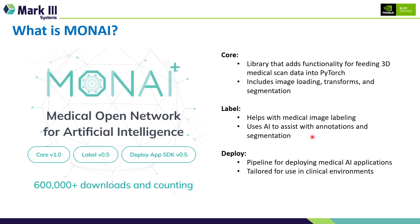Let's talk a little more deeply about Monai as a library. There are three different sections in Monai right now. The first is Core, and that's what we're going to primarily be dealing with today. Core is the main set of features for Monai — things like functionalities for feeding 3D scans into PyTorch, image loading functions, transformations, and some basic segmentation tools to help you with labeling.